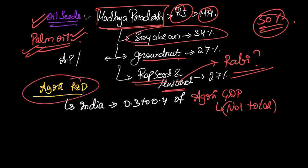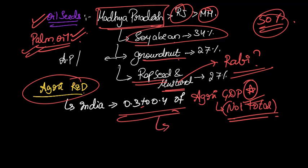The next aspect is agricultural R&D in India. The percentage of amount spent on R&D is very less - that is 0.3 to 0.4 percent of agricultural GDP. Please note this point. It is not the total GDP, it is just the agricultural GDP.